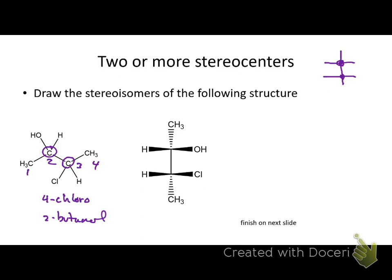So when you have enantiomers, how do you draw them? Somebody give me a brief summary. You just change two groups, right? That's the brief summary. So if I wanted to draw this stereocenter and show the mirror image, all I have to do is switch two groups.